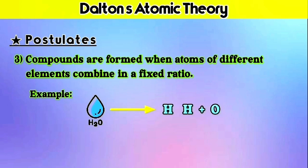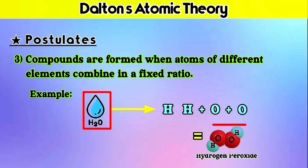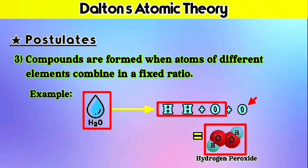But if we make some changes in the combination ratio, what will happen? Let's find out by adding one more atom of oxygen. When we do so, the whole compound changes from water to hydrogen peroxide, whose chemical formula is H2O2. By adding just one atom of oxygen, its complete identity has changed. That's why, according to this postulate, for the formation of any particular compound, elements should combine in a proper, fixed ratio — there shouldn't be any variation in the atoms combining. So the third postulate is also clear.